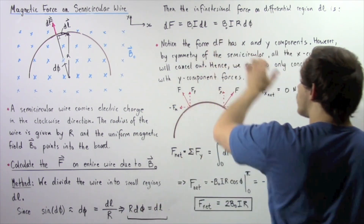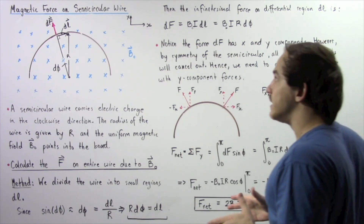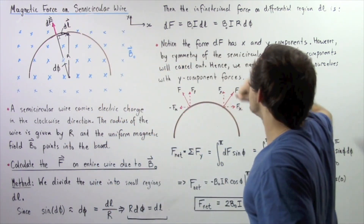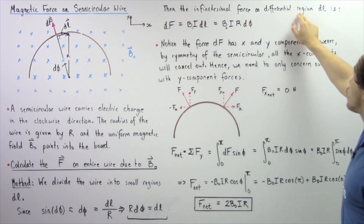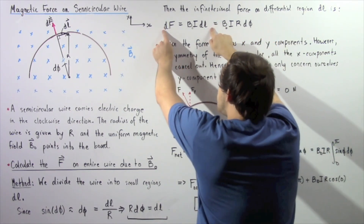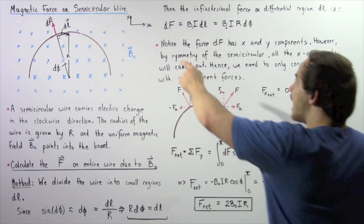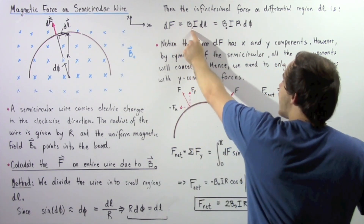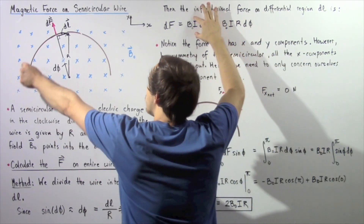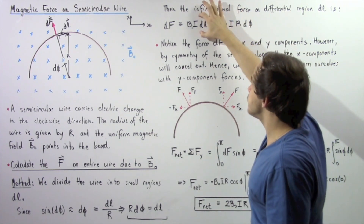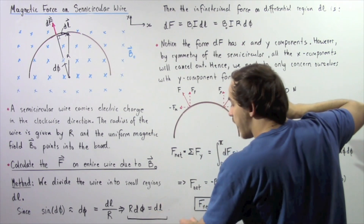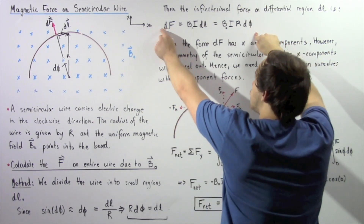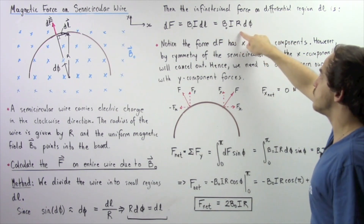Now we calculate the infinitely small force dF acting over the region dL. The force on this differential region is dF = B0·I·dL, as discussed in a previous lecture. Since dL = R·dφ, we can replace dL to get dF = B0·I·R·dφ.